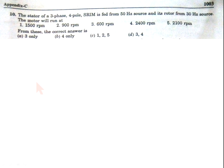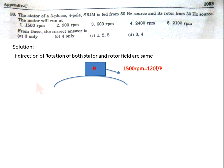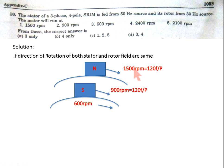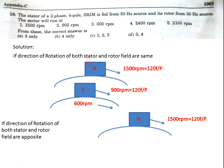Question 10: The stator of a 3-phase, 4-pole induction motor is fed from a 50 Hz source and its rotor from a 30 Hz source. The motor will run at 1500, 900, 600, 2400, or 2100 rpm — which is correct? Solution: If the direction of rotation of both stator and rotor fields are the same, applying 50 Hz to the stator gives a stator field at 1500 rpm, and 30 Hz to the rotor gives 900 rpm. For synchronization, the rotor must run at 600 rpm (1500 − 900 = 600). So statement 3 (600 rpm) is correct.